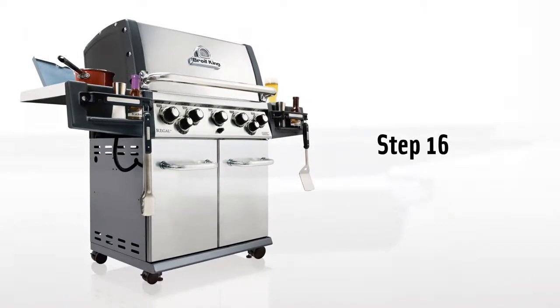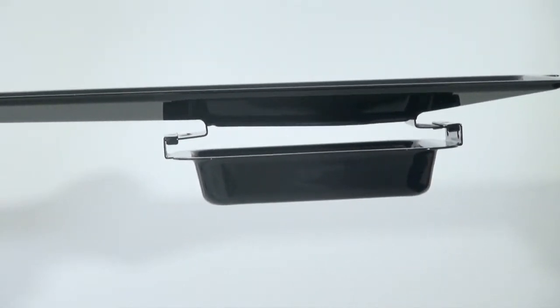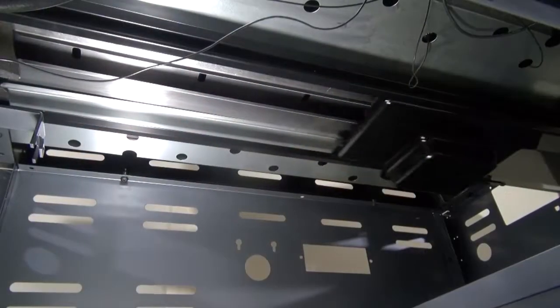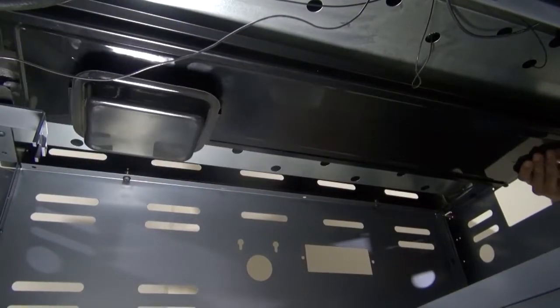Step 16. Install the grease pan onto the grease tray and slide through the opening on the cabinet side panel. The grease tray will drop into place when centered on the grease rail assembly.